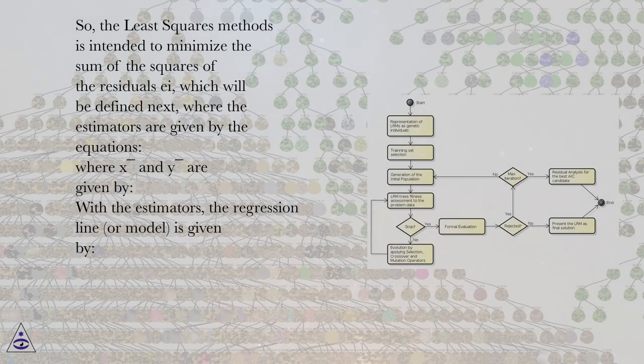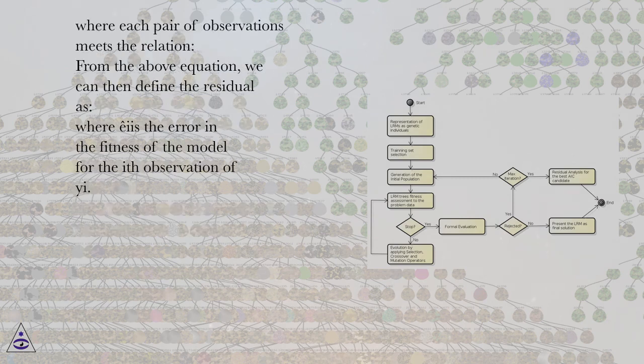Where X bar and Y bar are given by. With the estimators, the regression line, or model, is given by. Where each pair of observations meets the relation. From the above equation, we can then define the residual as.